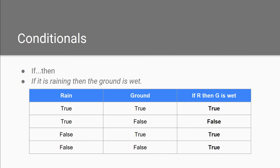Consider the conditionals. Conditionals usually revolve around 'if-then' — it's like programming where you have if-then statements: if given a condition and if it's true, then this happens. Consider: 'If it is raining, then the ground is wet.' We construct a truth table looking at rain, the ground, and our statement. If it's raining and the ground is wet, the statement is true. But if it's raining and the ground is not wet, it's false — because I'm asserting that if it's raining then the ground is indeed going to be wet.